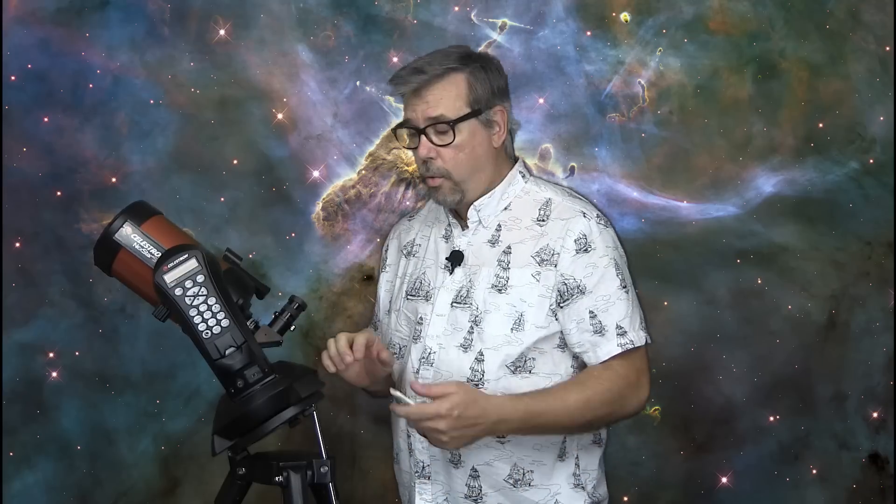This is an equatorial wedge, right here, which on bigger telescopes costs a lot of money, and it comes with this particular telescope, so that's a really good thing. So having this allows you to run in polar mode, which is important if you're doing long exposure astrophotography with it. You line this arm up with the North Celestial Pole and it tracks the stars without field rotations.